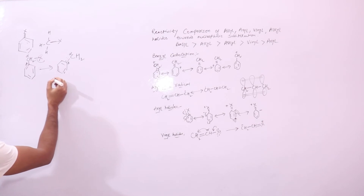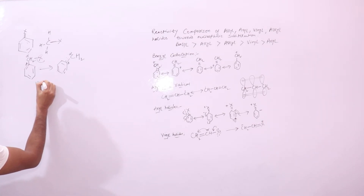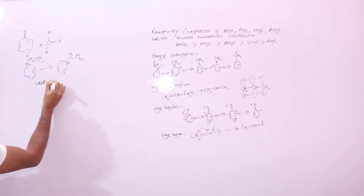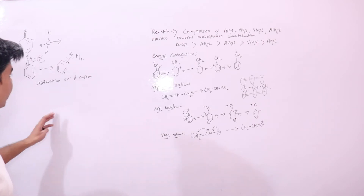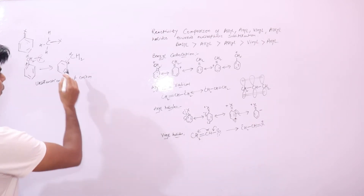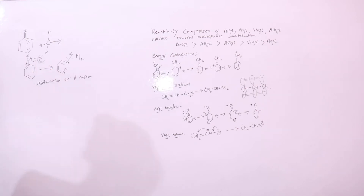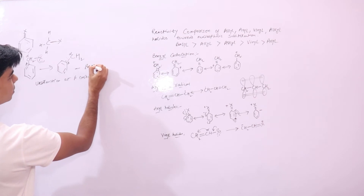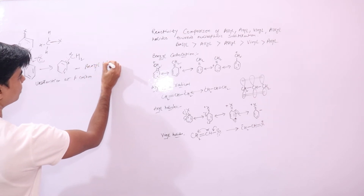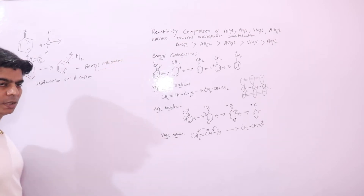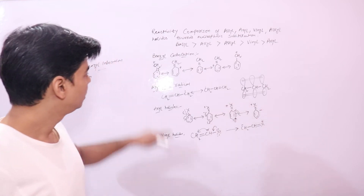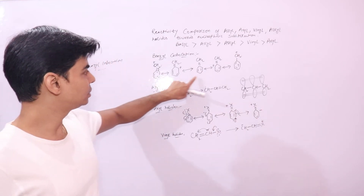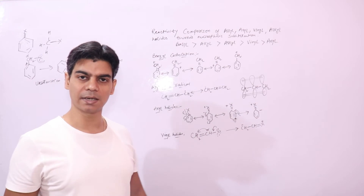In the benzyl system, the halogen is not directly on the ring; the double bond is at the beta carbon. When it loses the halide ion, forming the benzyl carbocation, let's see how this makes nucleophilic substitution easier. If you look at the resonating structures, these are the resonating structures for the benzyl carbocation.